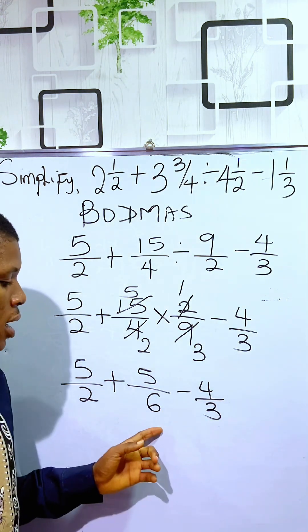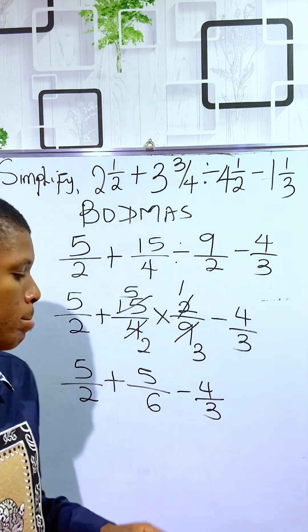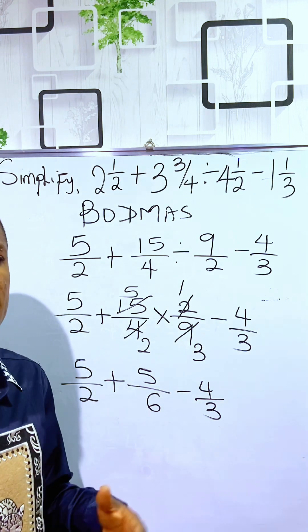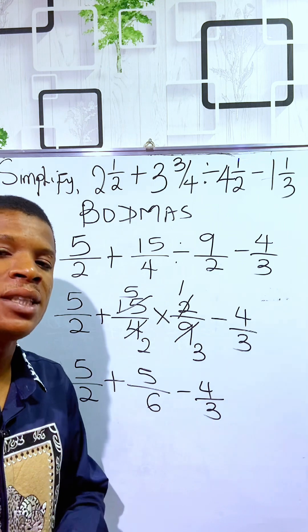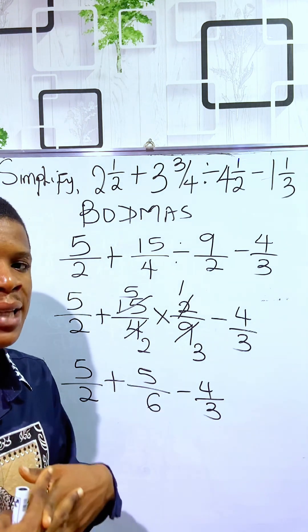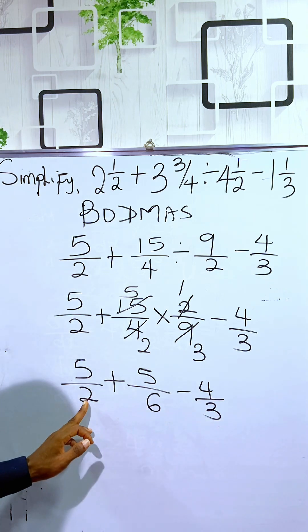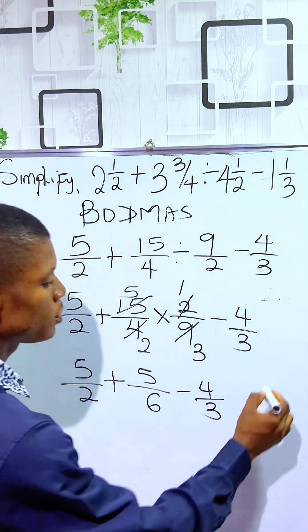So, since we have this now, since the addition and subtraction is here, we can find them in the same denominator so that we can simplify. We can convert them to an equivalent denominator so that we can add numerators. So, to do that, we find the LCM of 2, 6, and 3.